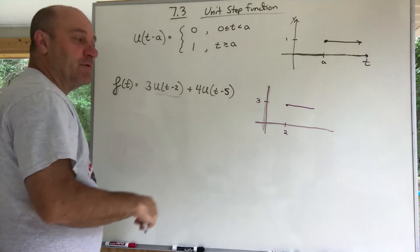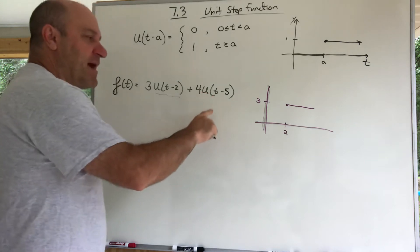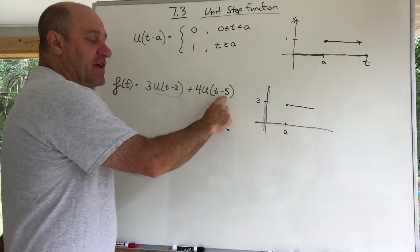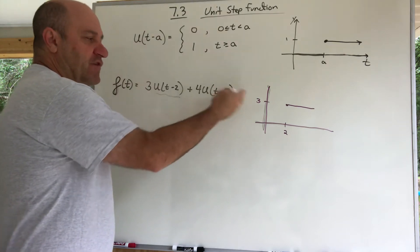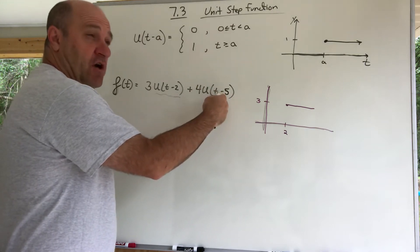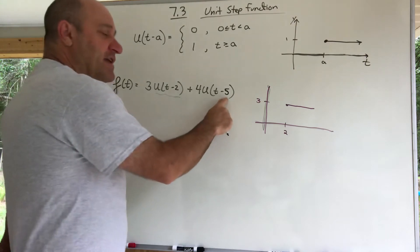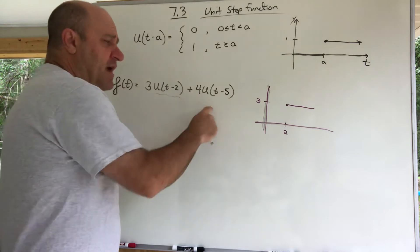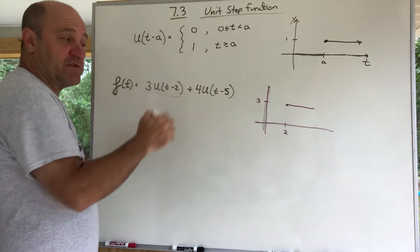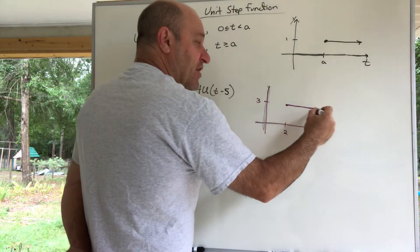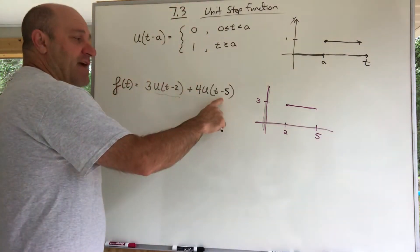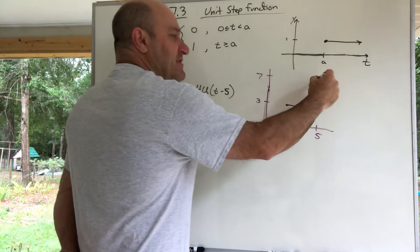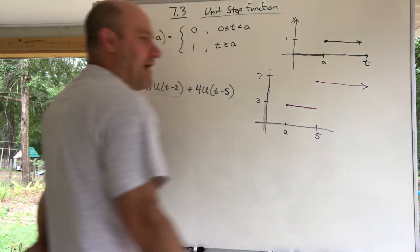It stays a three as long as t is greater than 2. But something happens when we get to 5. The second term, 4·u(t - 5), has been off — a zero — the whole time until you get to 5. Then it gets turned on and becomes a one, so one times 4 is 4. We're adding 4 to the 3 we already had, which brings us up to 7.